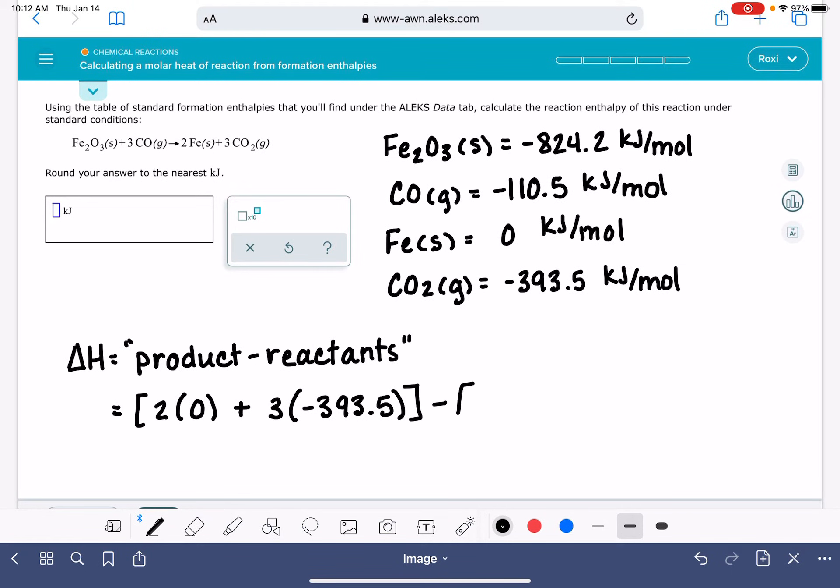And then from that, we will subtract our reactants. Our first reactant, Fe2O3, the coefficient is 1, and its delta H value is negative 824.2. And then our other reactant, CO, the coefficient is 3, and the delta H value is negative 110.5. And I left the units off of all of these, but all of them have the same unit, kilojoules per mole.